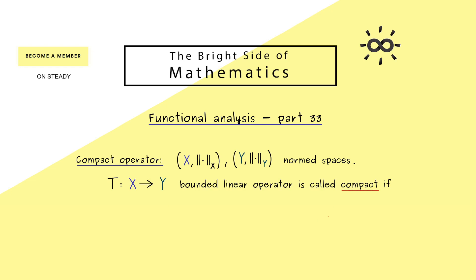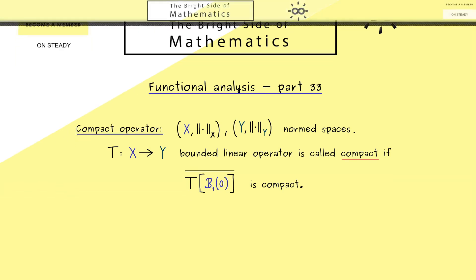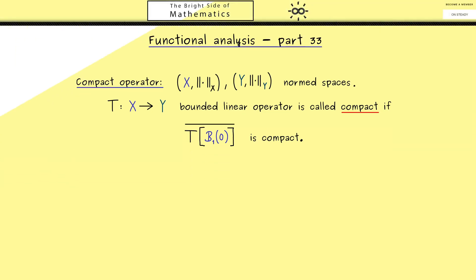And then T is called compact if it sends bounded sets to almost compact sets. It means that the closure of the image has to be compact. And here you also already know it's sufficient to look at the unit ball B_1(0). So this is the definition we already know and now let's see what this means for the spectrum.